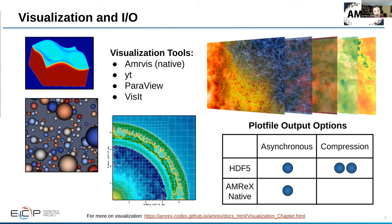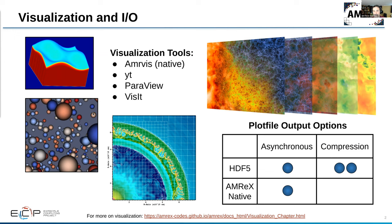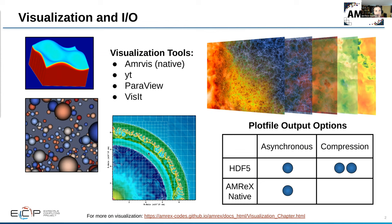A number of visualization tools support AMReX grid and particle data. Starting from the top-left and going around: AMRvis (natively developed), ParaView showing 3D particle data animations, a plot from VisIt showing adaptive mesh refinement boxes, and a composite image made with the Python package yt.